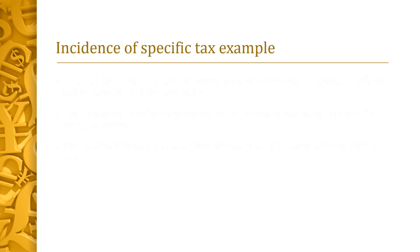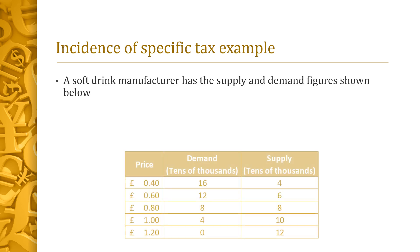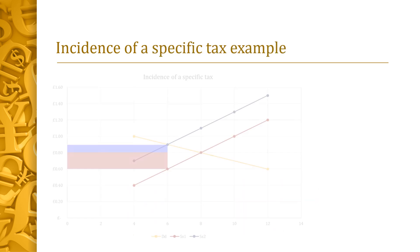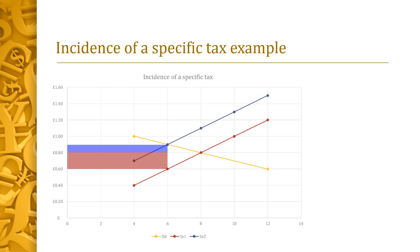Let's take a look at an example of the incidence of a specific tax. A soft drink manufacturer has the supply and demand figures shown below. The government implements a specific tax of 30 pence on each soft drink, meaning that firms will want to receive 30 pence more to supply the same amount as they're currently doing. Initially, we have a quantity supplied and demanded of 80,000 units and an equilibrium price of 80 pence.